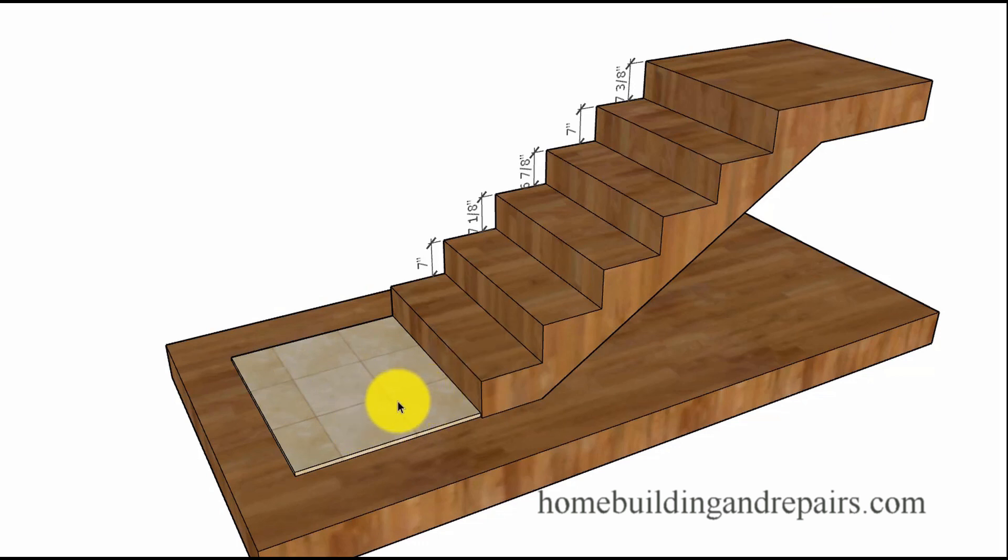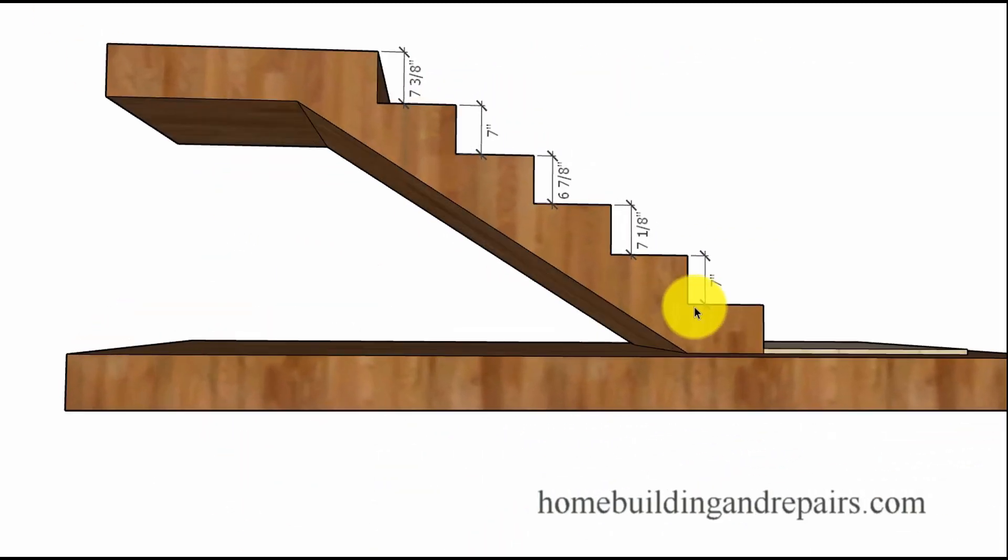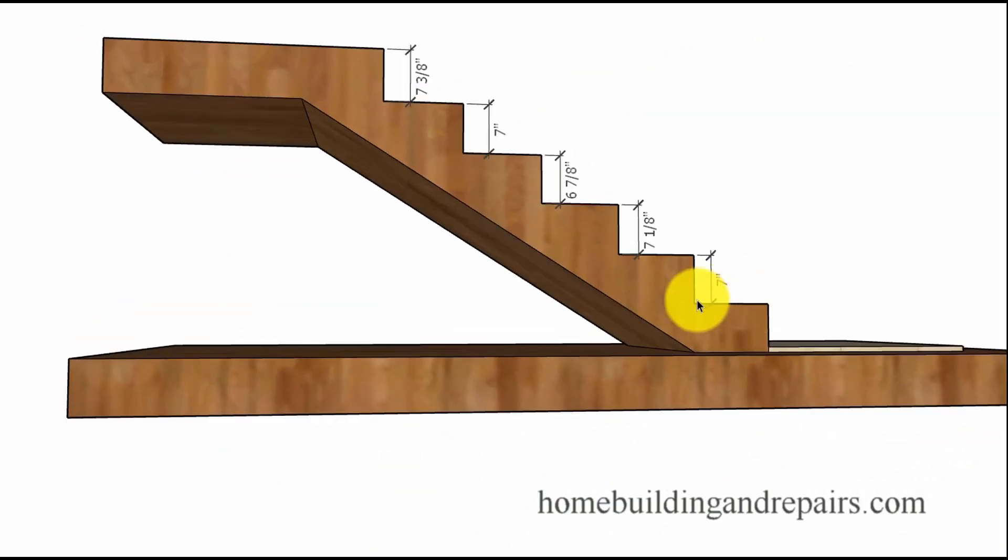For example, you might be remodeling your home and decide to add three-quarters of an inch of tile to the floor, and now you have a three-quarter inch difference between the stair steps. Or you might choose to install treads that are a half inch thick on top of your existing steps, creating a problem again at the bottom or the top of the stairway. Most building inspectors check these areas first because they're familiar with that, and now you are also.